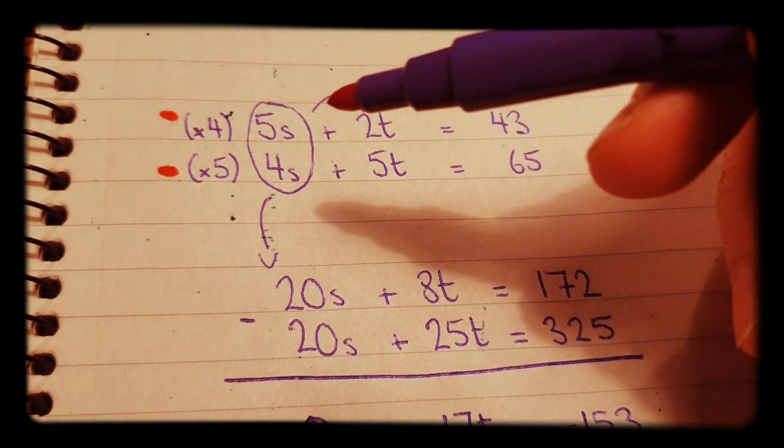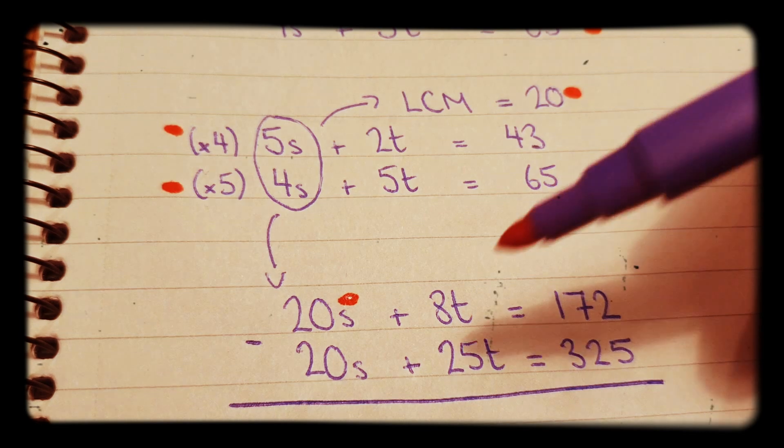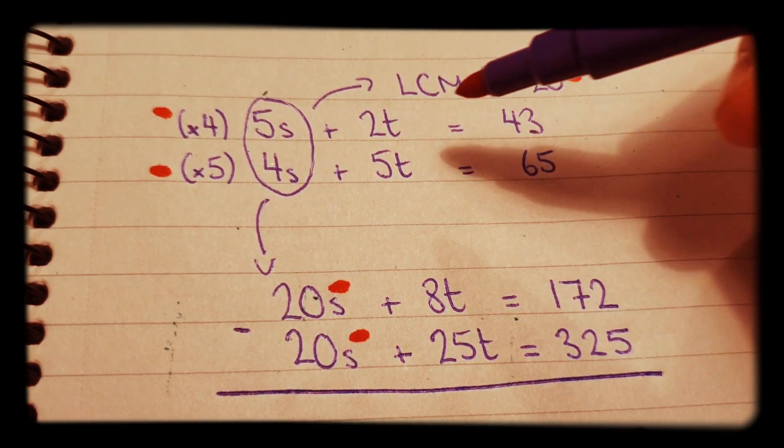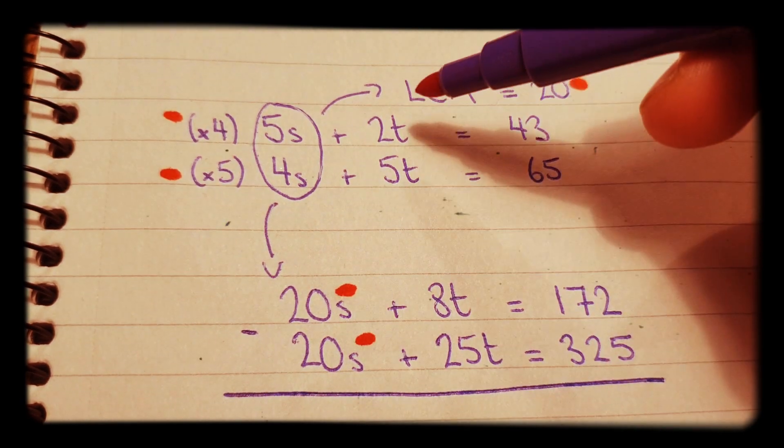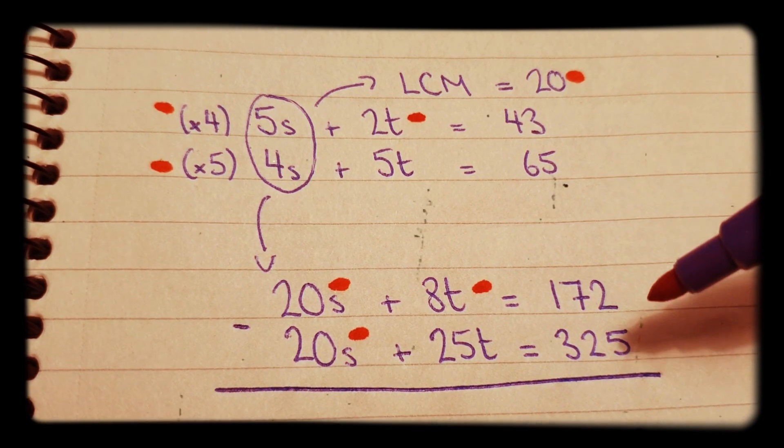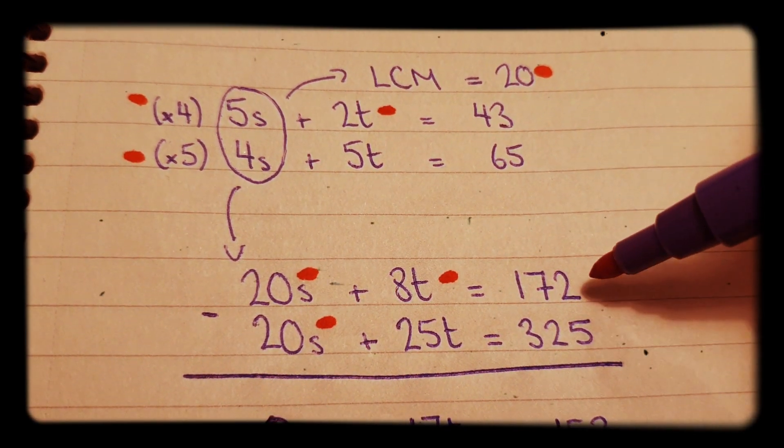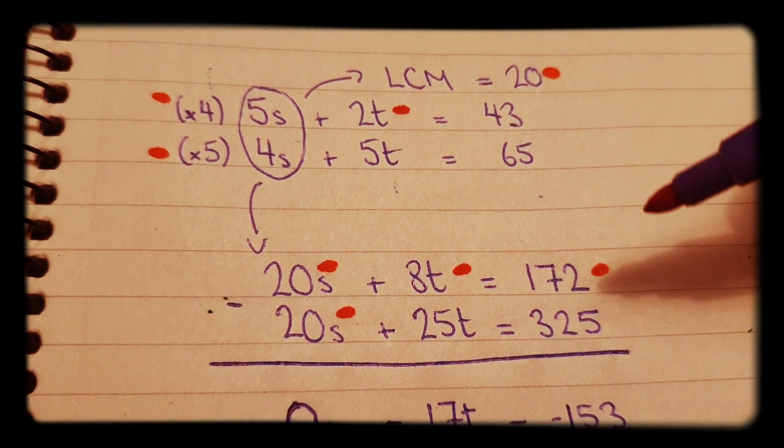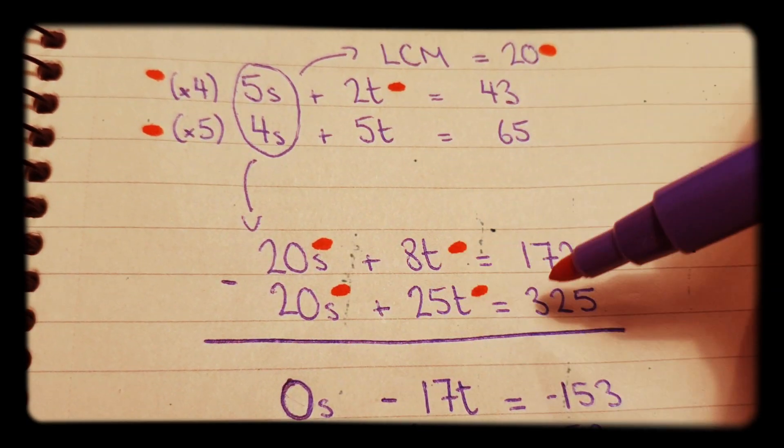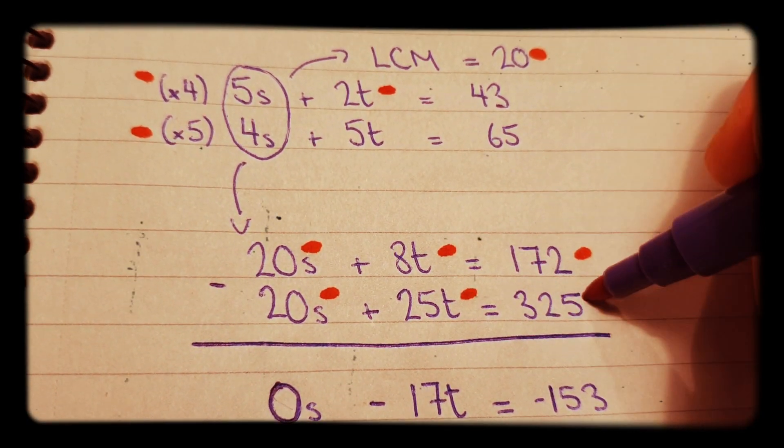Once we do that, we will get 20s at the top and 20s at the bottom. The top line will be 20s plus 8t because we're timesing it by 4, equals 172. And the bottom line will be 20s plus 25t because we're timesing this line by 5, equals 325.